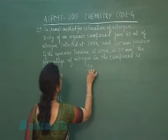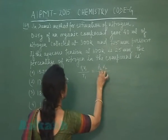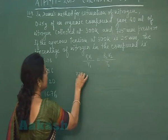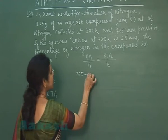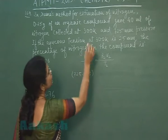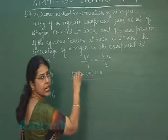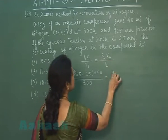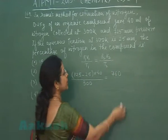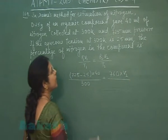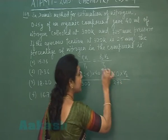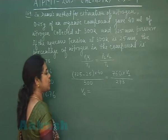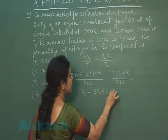Applying the formula P1V1/T1 = P2V2/T2: the pressure of nitrogen gas is 725 − 25 = 700 mm (subtracting aqueous tension), volume collected is 40 mL, temperature is 300 K. Standard pressure is 760 mm Hg and standard temperature is 273 K. Solving, the standard volume V2 = 33.53 mL.